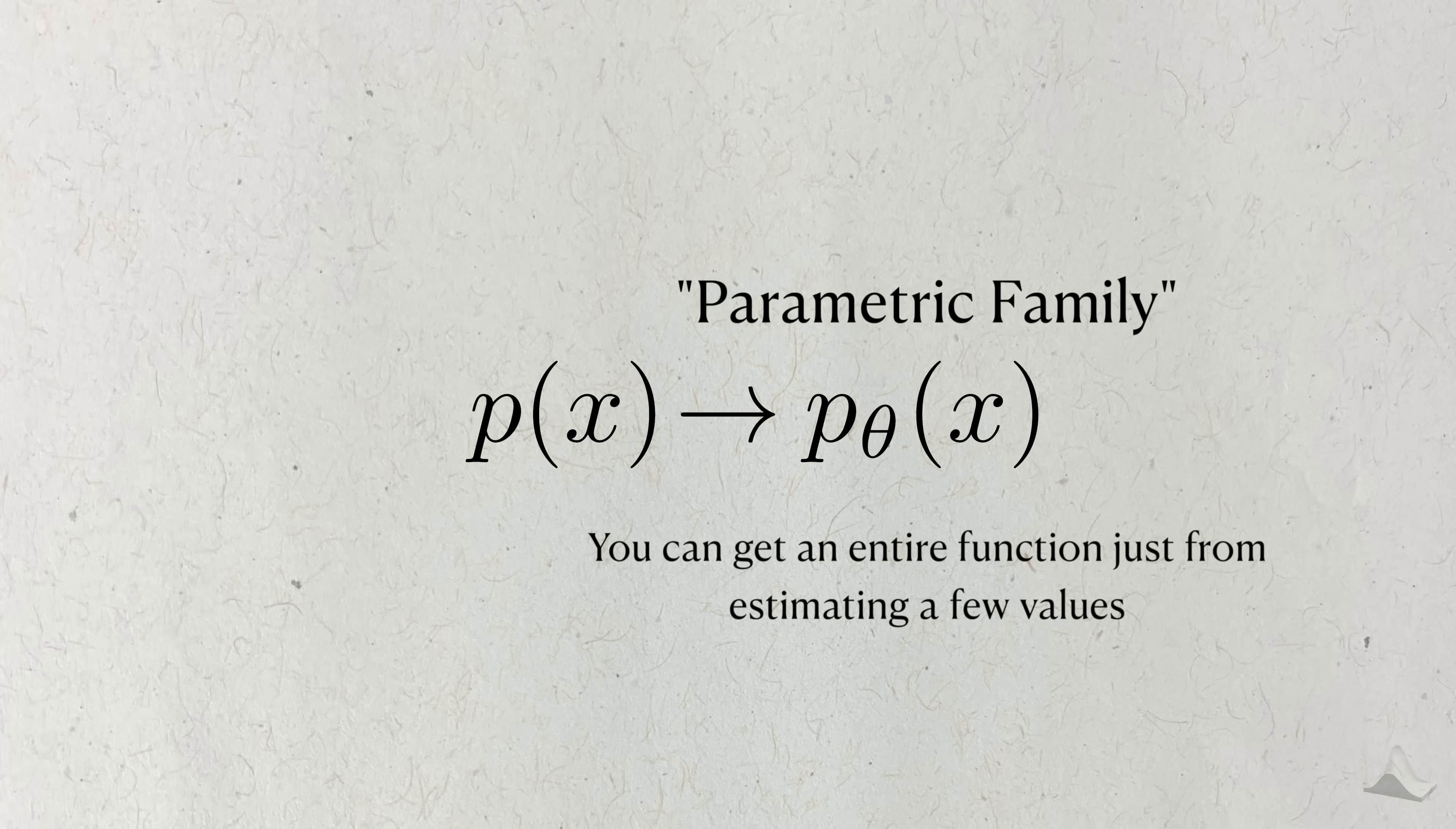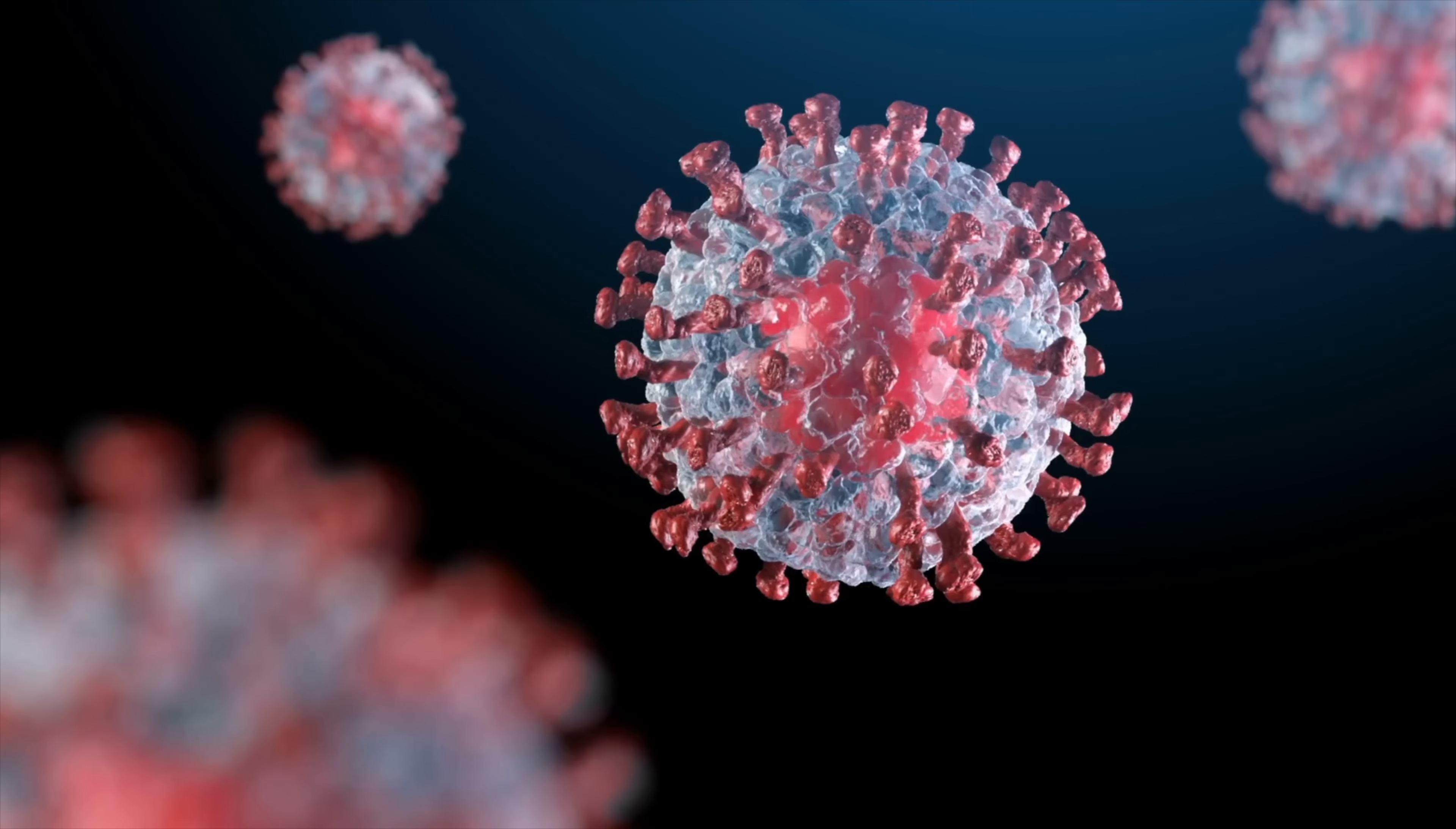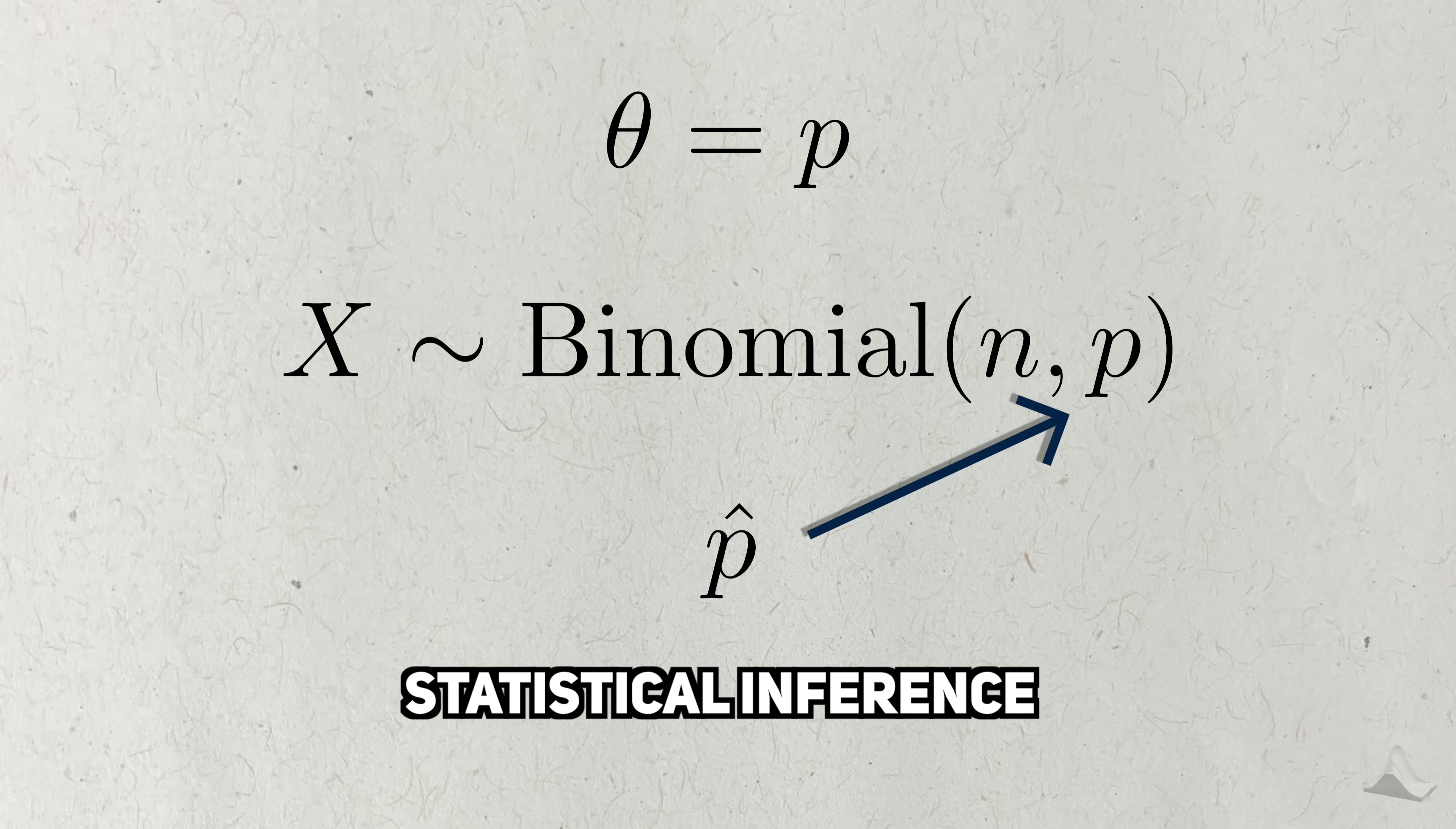One strategy for getting the PDF is to approximate it using a parametric family. With the parametric family, we can get an entire function just by estimating a few values called parameters, and I'll use theta to denote a general parameter. These parameters often represent values we want to know or study about a population. The binomial family has a single parameter, which we denote as P. This P represents the probability that an event will happen, for example if a certain vaccine protects someone from a certain virus. Once we collect the data, we try to use it to estimate these parameters and learn more about the world from this estimate. This is called statistical inference.